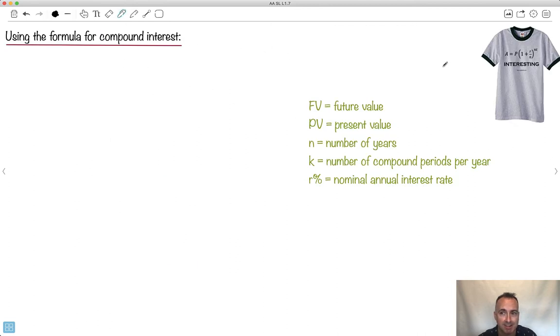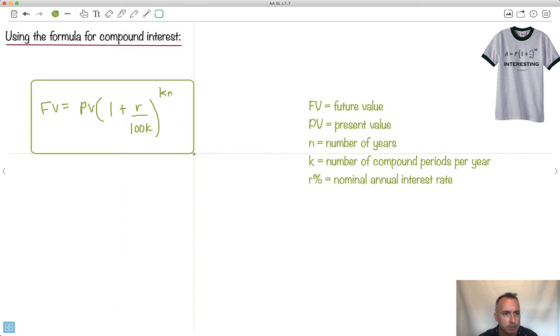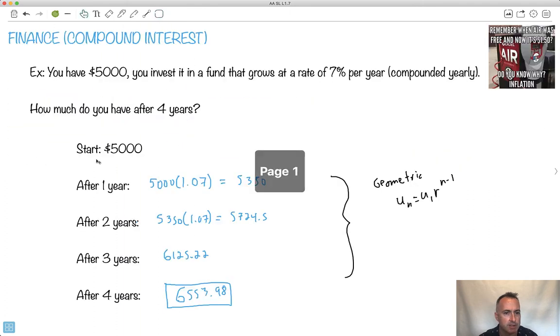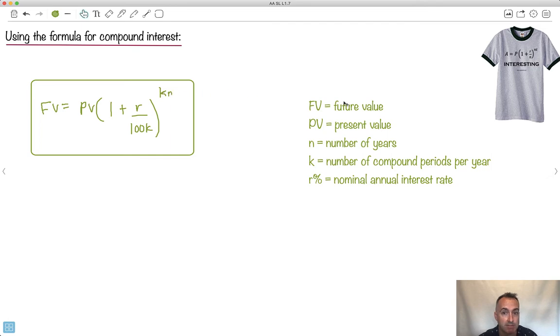Now the good news is we actually get a formula for it. So we get a formula for compound interest. I like this because it says interesting. Get it? Because it's compound interest. So there's a formula in your formula booklet and here it goes. So it says, and it actually, it's written just like this. So it says FV equals PV times 1 plus R over 100 times K to the power of KN. Yeah, yeah, that'll be right. Okay, so this is a formula we need. So this is just a formula we can use. Do you notice it looks kind of geometric-like?